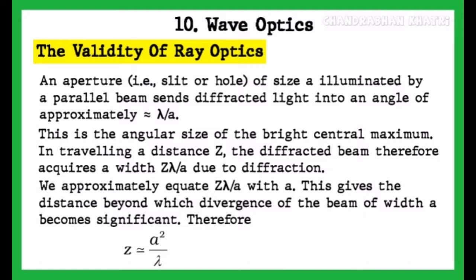The validity of ray optics: an aperture (that is, a slit or hole) of size a, illuminated by a parallel beam, sends diffracted light into an angle of approximately λ/a. In traveling a distance z, the diffracted beam acquires a width.